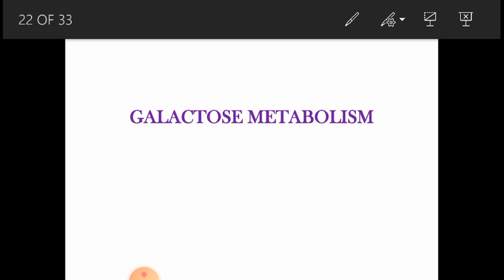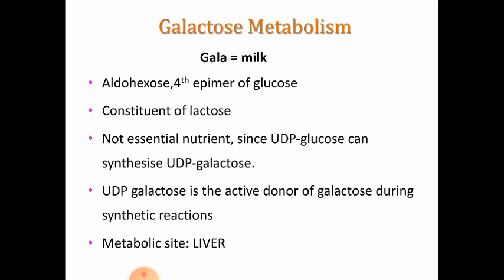Galactose is the C4 epimer of glucose. It is an aldo hexose and the name 'gala' means milk. It constitutes lactose, which is mainly found in milk. It is not an essential nutrient since UDP glucose can synthesize UDP galactose. UDP galactose is an active donor of galactose during synthetic reactions, and the metabolic site is the liver.